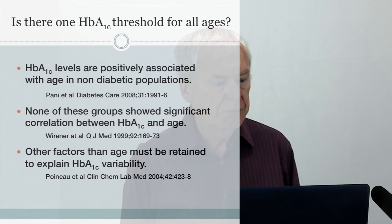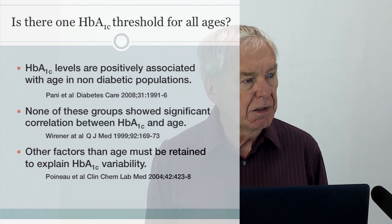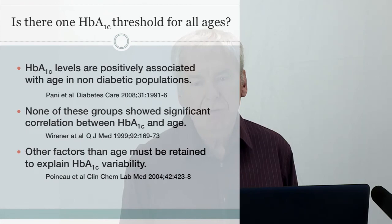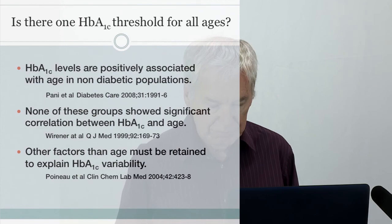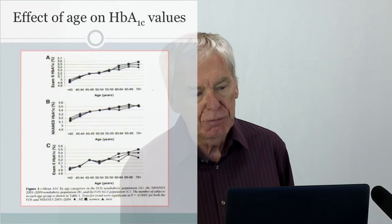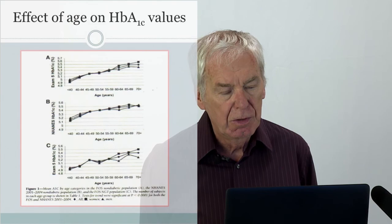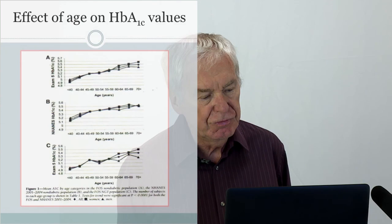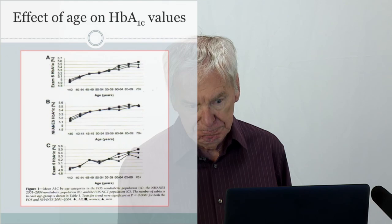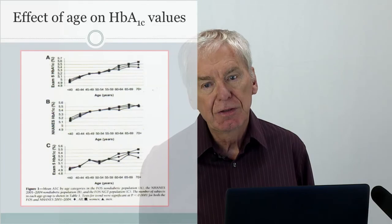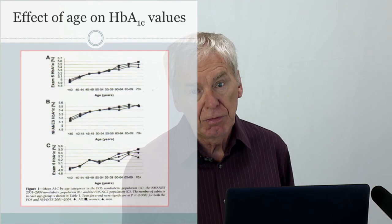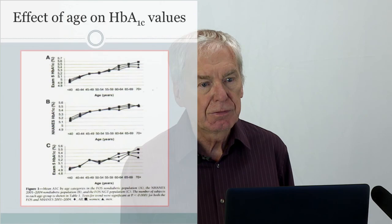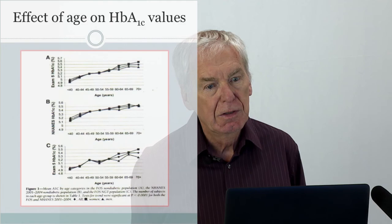Is there one A1c threshold for all ages? The guidelines suggest that at 6.5%, this is strongly suggestive of diabetes. But looking at data from different ethnic groups — Caucasians, Mexican-Americans, and blacks — plotting age versus median A1c, all groups show the same trend: the youngest ages have the lowest values, and the oldest have the highest. There is a clear increase in mean A1c with age, and there is also quite a difference between the three ethnic groups, illustrating the ethnic diversity of hemoglobin A1c.